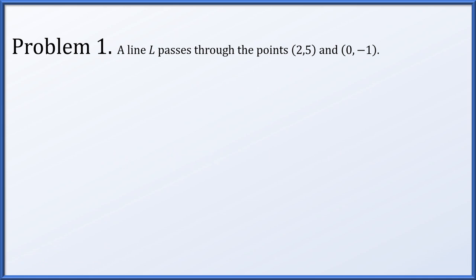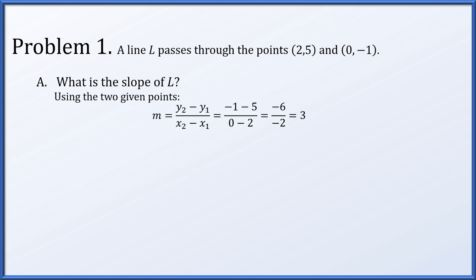Problem 1. A line L passes through the points (2, 5) and (0, -1). First, what is the slope of the line L? Using the two given points, we compute m to be the difference in y-coordinates over the difference in x-coordinates, and this resolves down to 3.